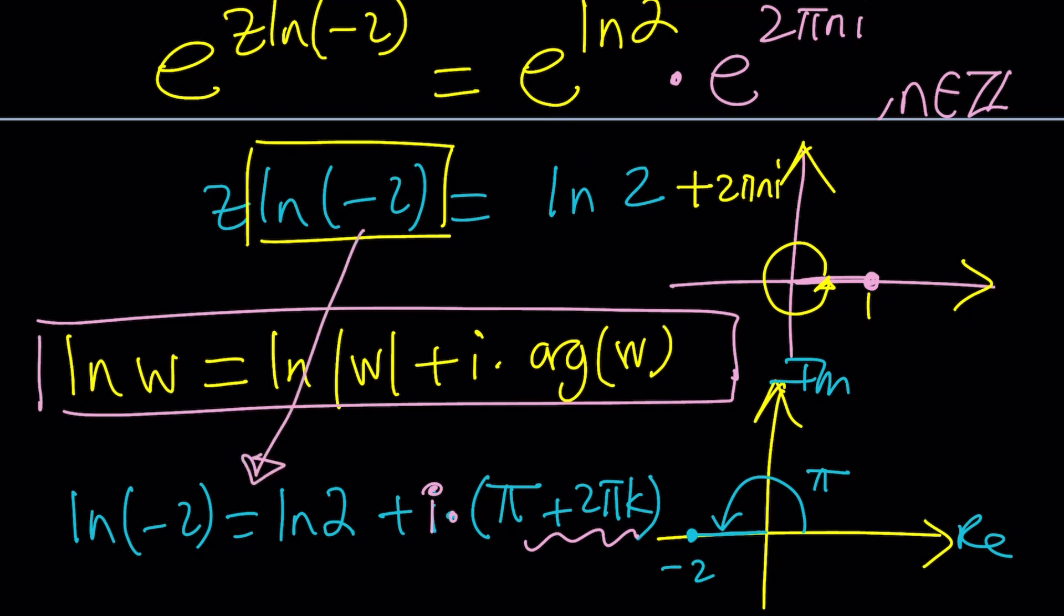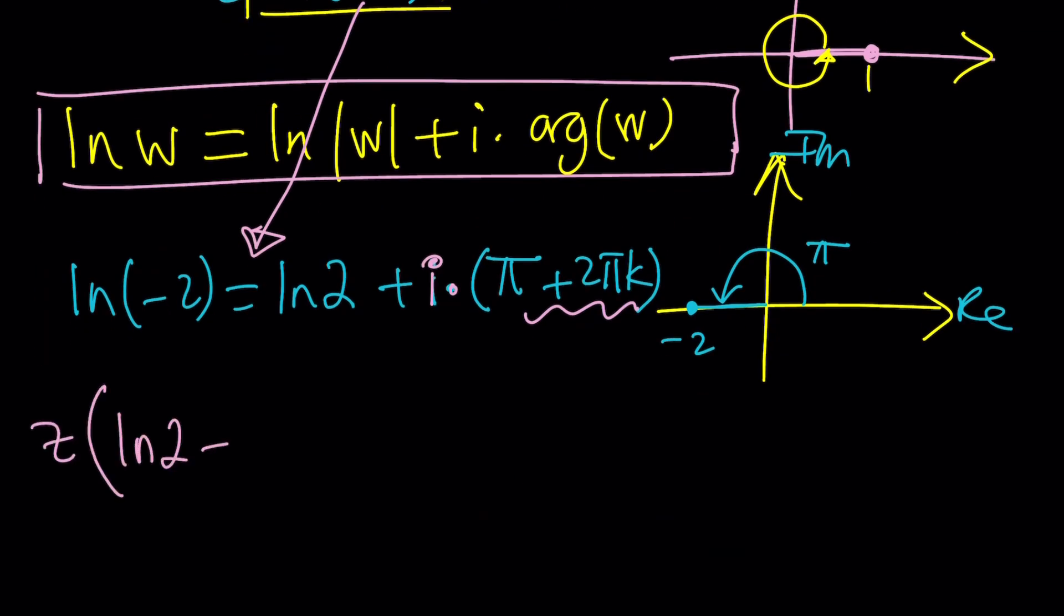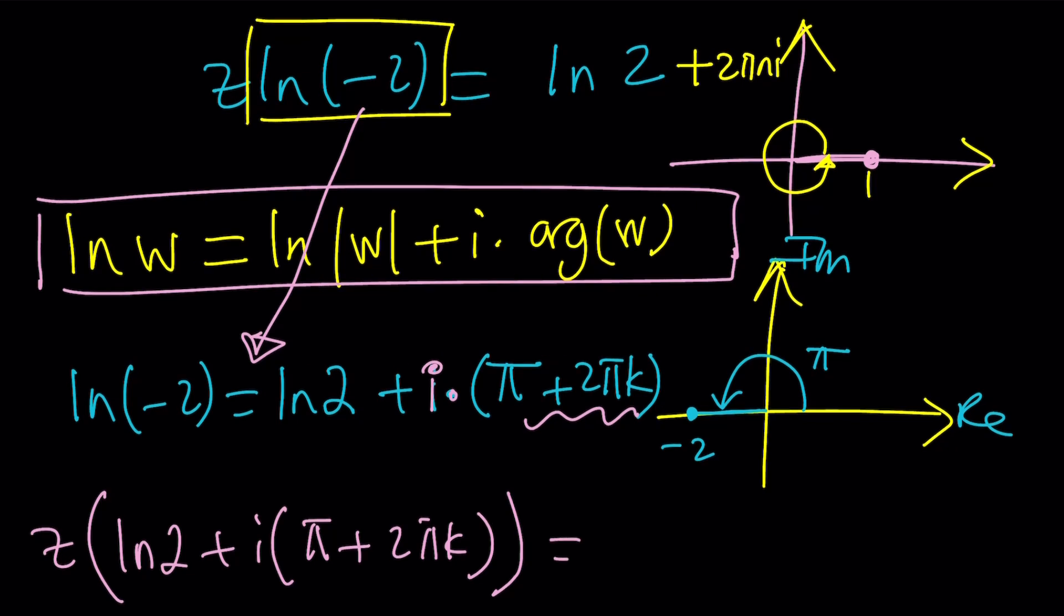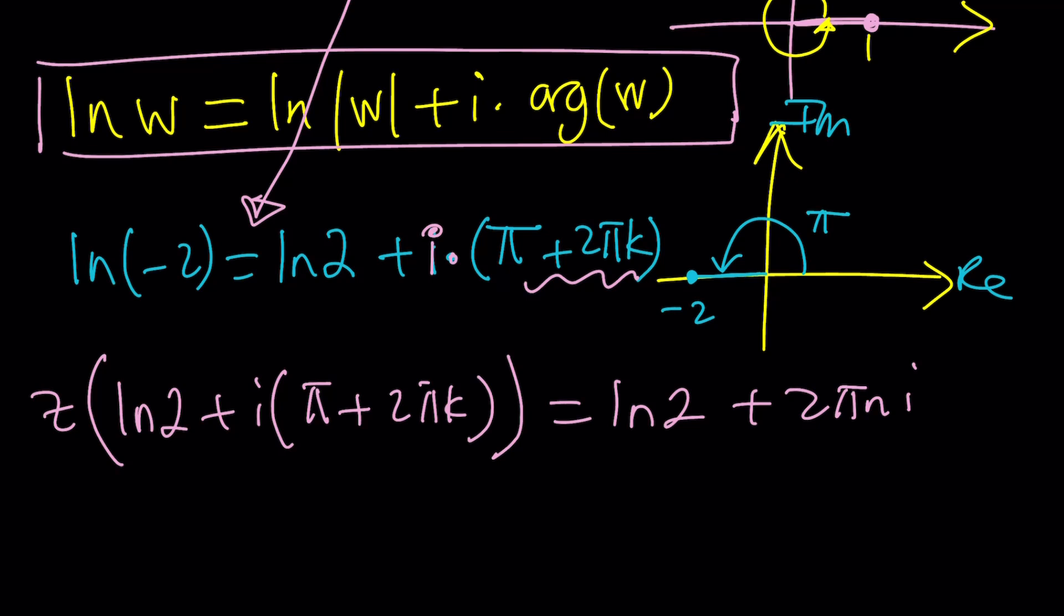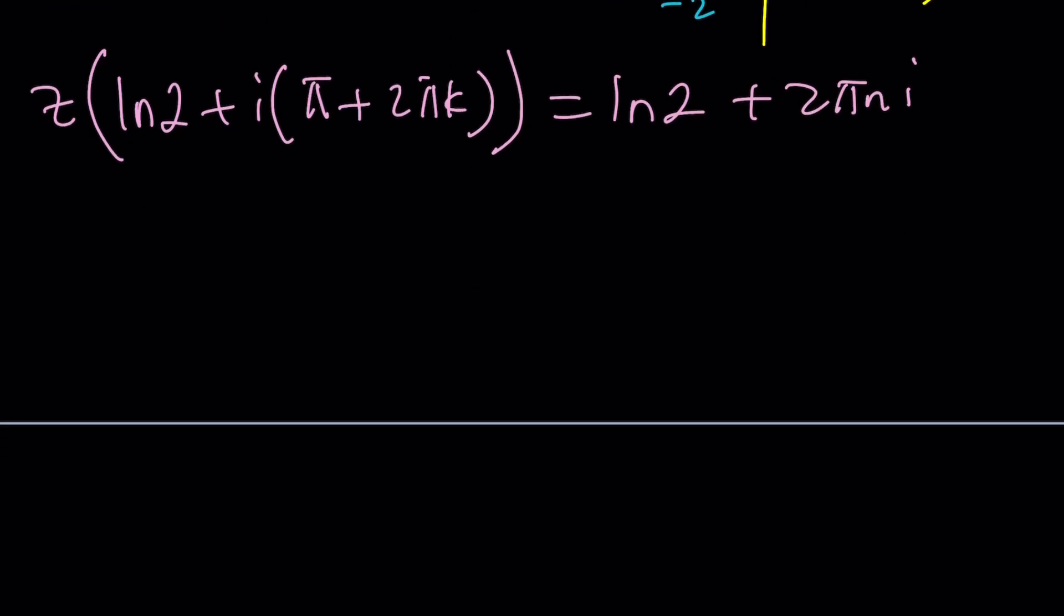Z times ln of negative 2. We're going to go ahead and plug it in. So, z times this gigantic thing: ln 2 plus i times (π + 2π k). And, then this is just ln 2 equals ln 2 plus 2π n i. It doesn't matter how you write it. I'm usually used to writing it as 2π n i. Great. Now, one thing that I want to tell you is that we're going to compare our results with Wolfram Alpha. Do you think they're going to be exactly the same? Or, is there going to be a difference? We'll talk about that.